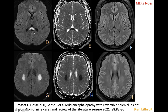If it's only involvement of the splenium, it's called MERS type 1, and if there's more extensive involvement — sometimes of the white matter of the corona radiata — it's called MERS type 2.